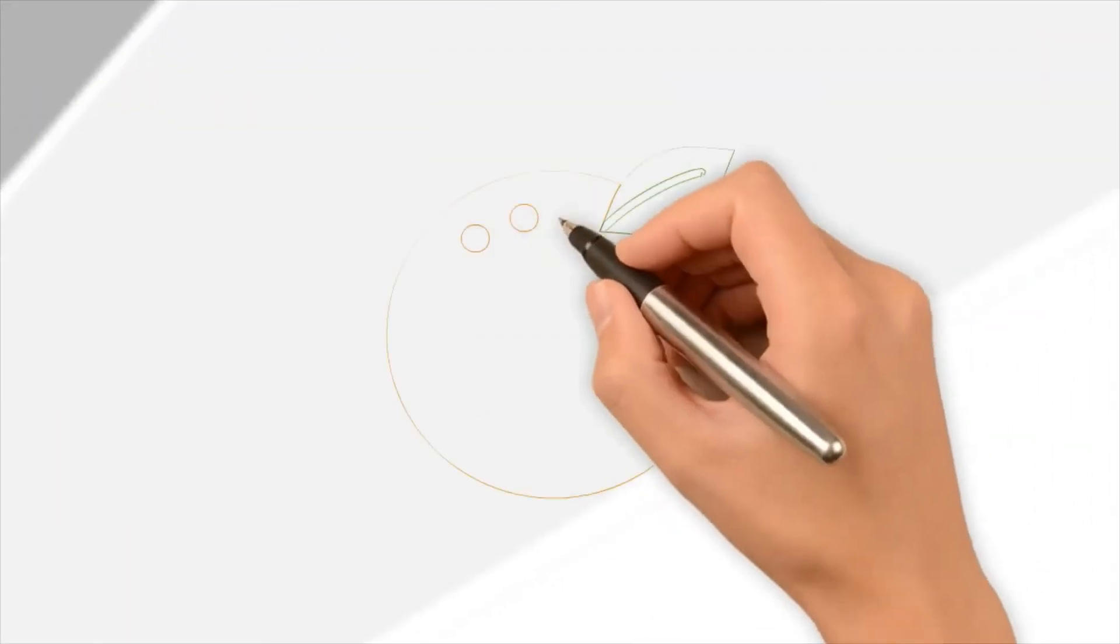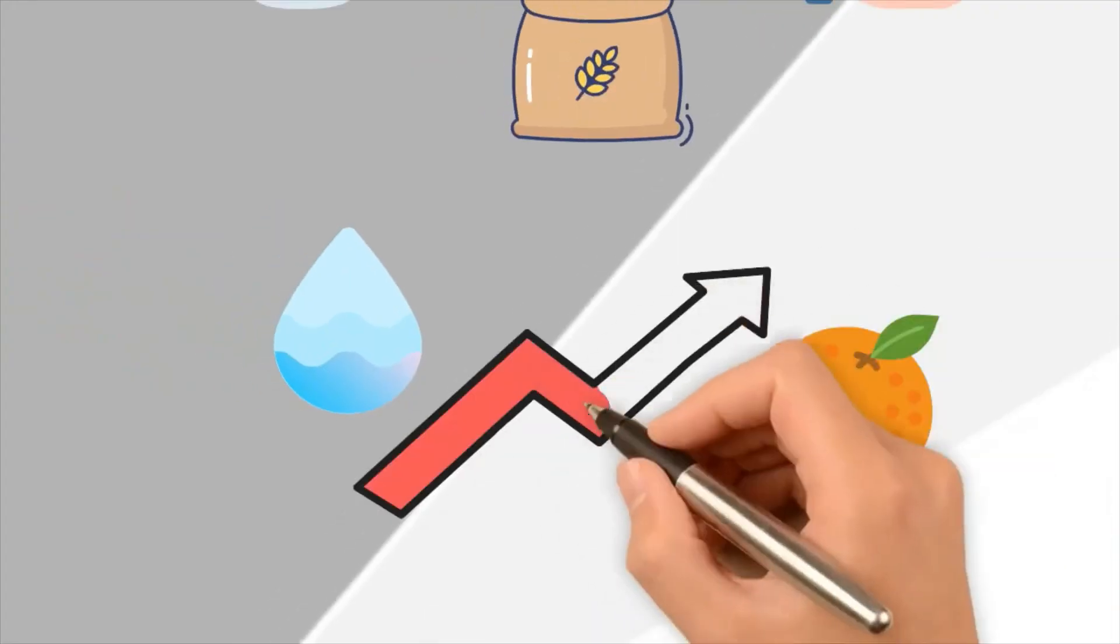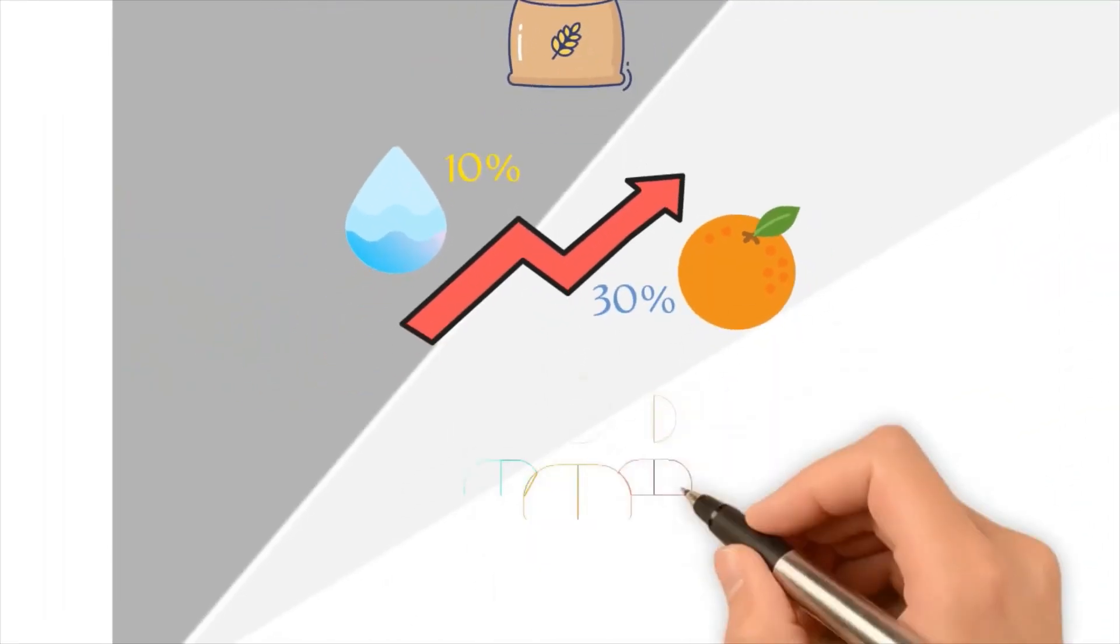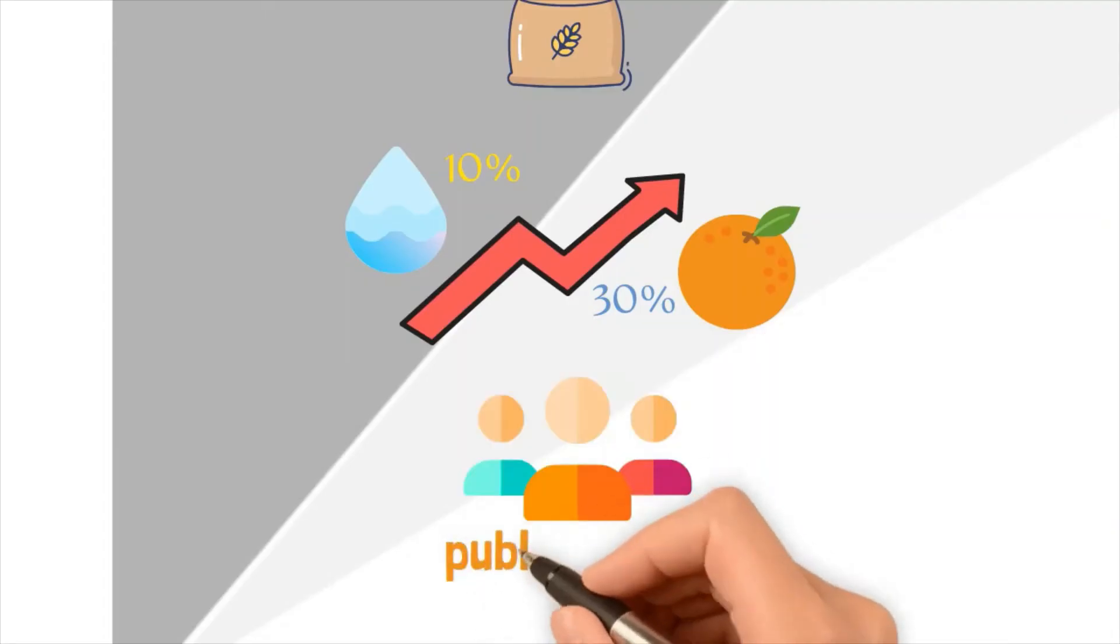For example, a mere 10% rise in the cost of water could increase the production cost of a single orange by as much as 30%. This simultaneously makes farming more difficult and decreases access to healthy food, which has ramifications for public health.